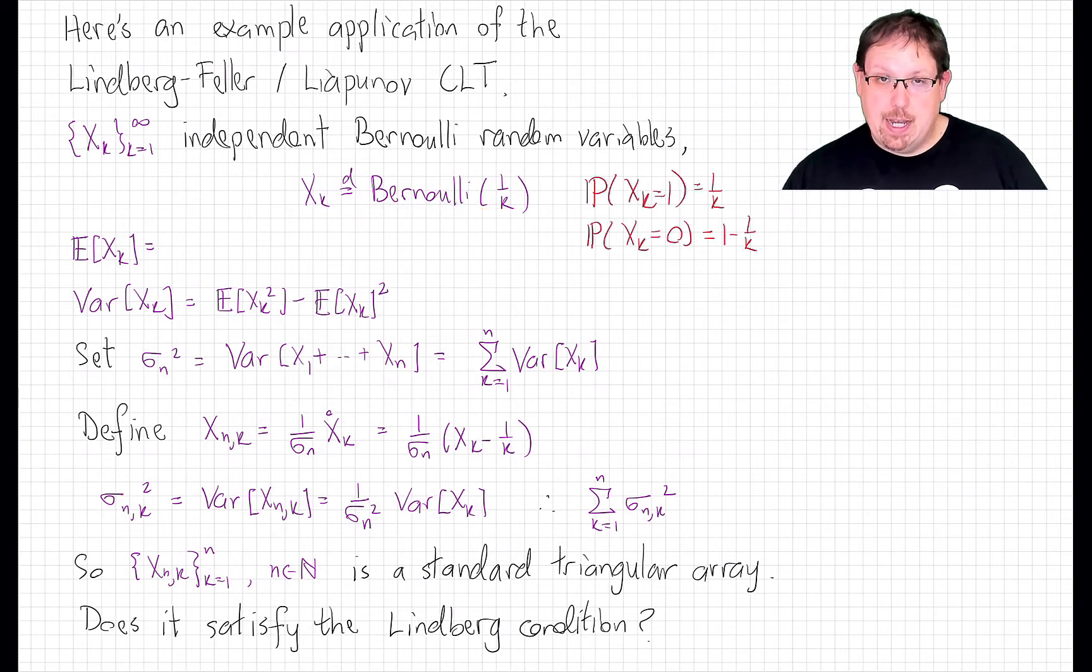That is, the probability that X_k equals 1 is 1 over k. The probability that equals 0 is 1 minus 1 over k. So these are clearly not identically distributed. They don't all have the same mean, for example.